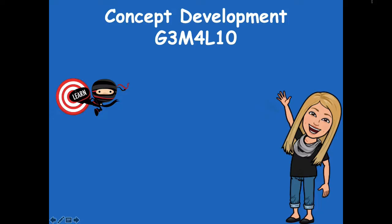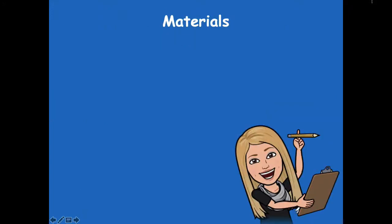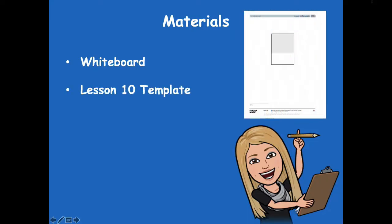Hey boys and girls, it's Mrs. Walker. For our lesson today we're going to talk about how we can use the distributive property to help us find the area of larger rectangles. We introduced this yesterday in our previous lesson and today we're going to dive in a little bit more. Our learning goal says: I can use the distributive property to find the area of larger rectangles by adding the product of two smaller rectangles. The materials you'll need are a whiteboard, a dry erase board, your lesson 10 template, which looks like this and can be found in the module or in your workbook.